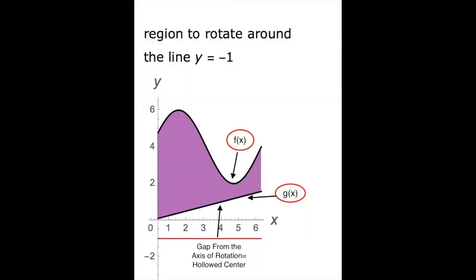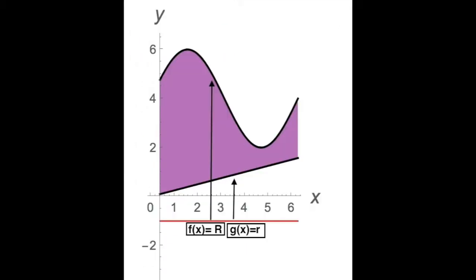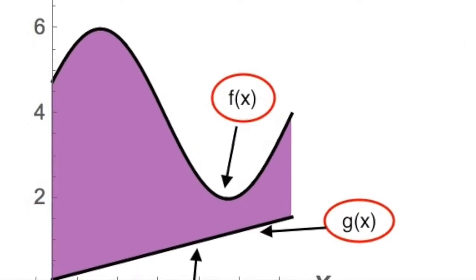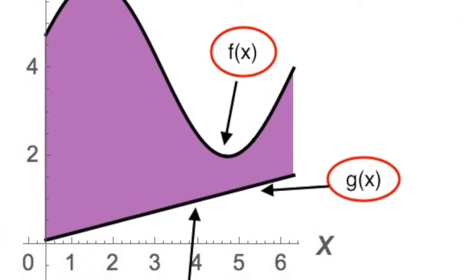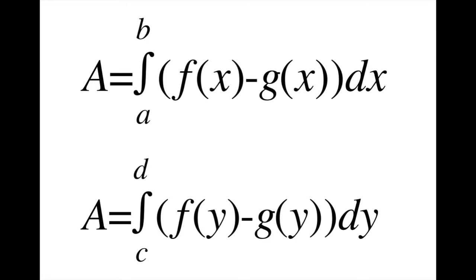Given the function f(x) is greater than or equal to another function g(x) from a to b, with both being continuous, set the big radius R as f(x) and set the small radius r as g(x). The area between these two curves f(x) and g(x) represents the area of a cross section of a washer. The area of the washer is the definite integral of f(x) minus g(x) with respect to x from a to b.